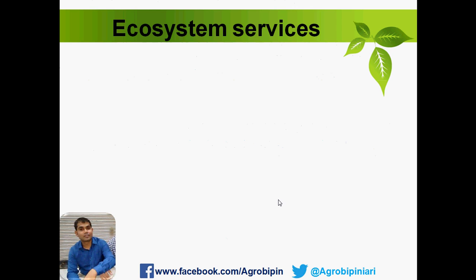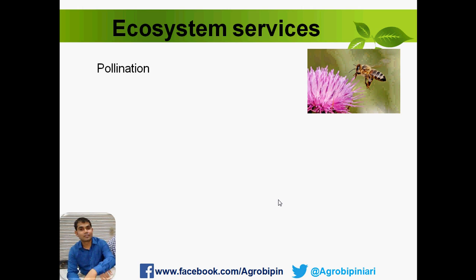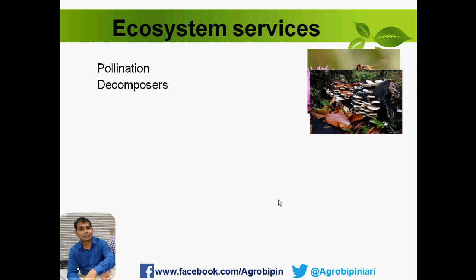Agrobiodiversity is important because it provides different types of services. For example, the honeybee is the best natural plant breeder on this planet, having bred our whole ecosystem since a long time. Without it, trees could not set seed. Similarly, decomposers play a great role — without them, it would not be possible to recycle products in the ecosystem. This is also a kind of ecosystem service provided by the agro-ecosystem.